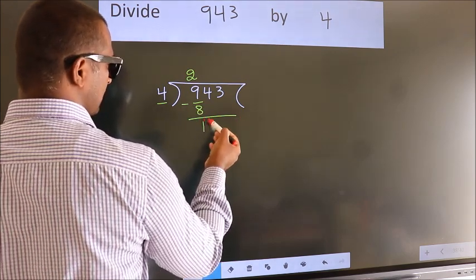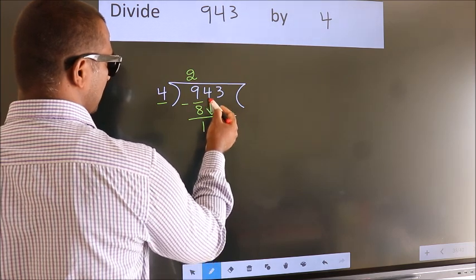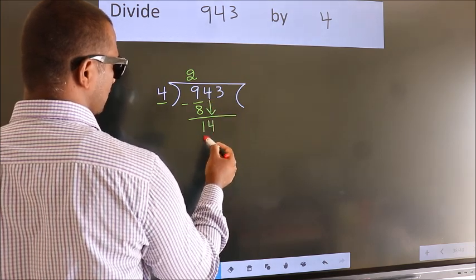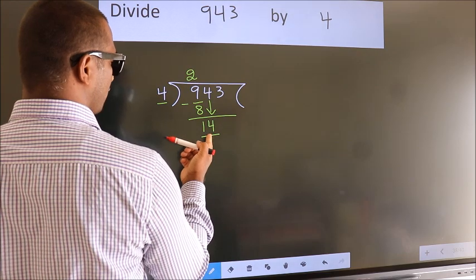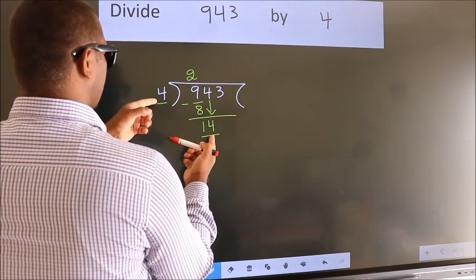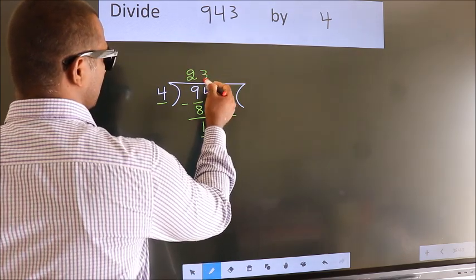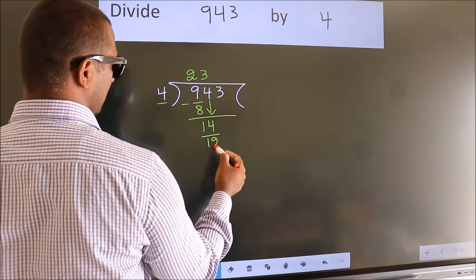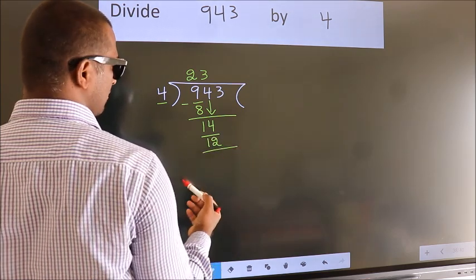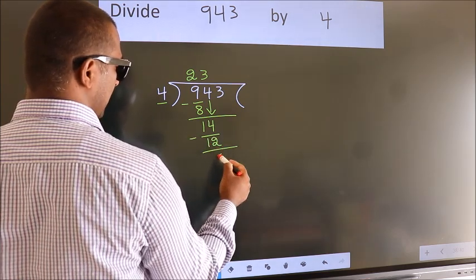After this, bring down the beside number, so 4 down. So 14. A number close to 14 in the 4 table is 4 threes, 12. Now we subtract. We get 2.